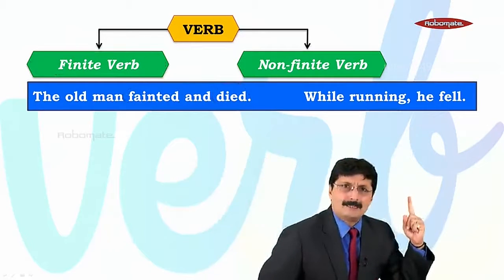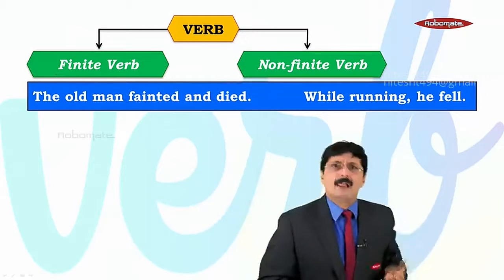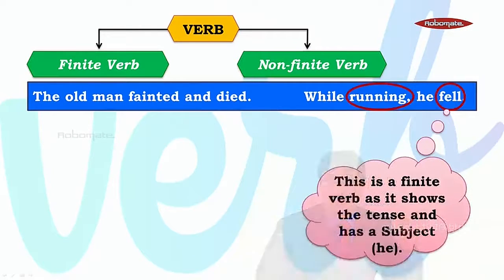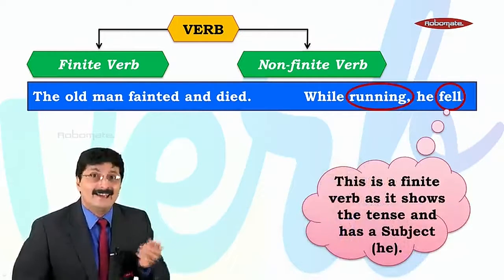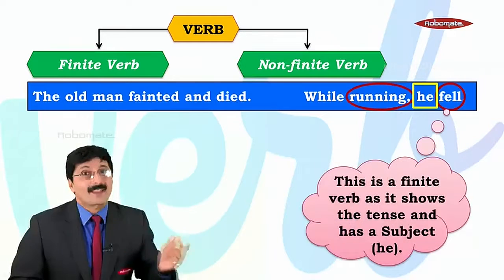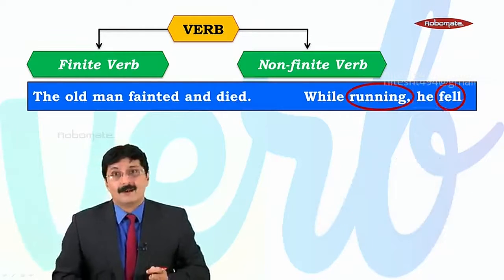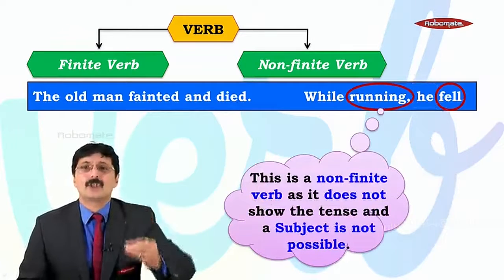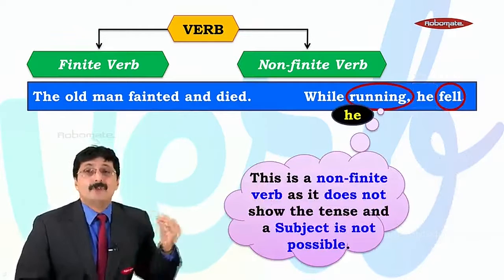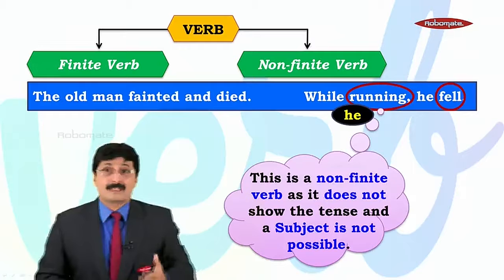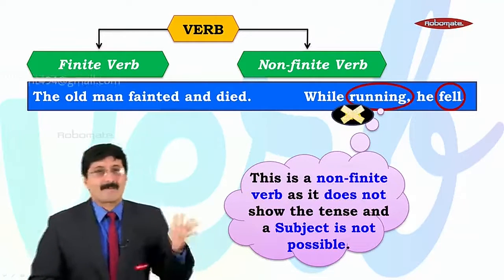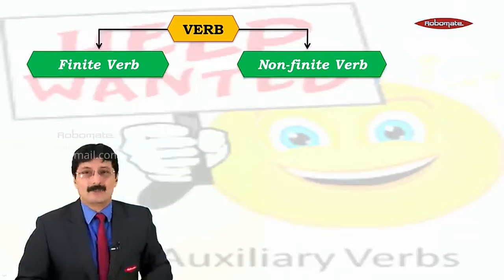But look at this sentence: 'While running, he fell.' Here also there are two verbs. 'Fell' is a finite verb because 'he' is the subject. But 'running' — well, you can clearly see the subject is not possible. Even if you try to put 'he' in this sentence: 'While he running, he fell' — bad grammar, not possible.